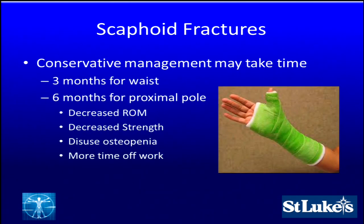With scaphoid fractures, conservative management may take time, and the more proximal the fracture, the longer it takes. Distal pole fractures can heal in six to eight weeks, but waist fractures can take up to three months, and proximal pole fractures can take up to six months with conservative management. Six months of immobilization in a cast obviously causes stiffness, decreased strength, disuse osteopenia, and more time off work, particularly in heavy laborers.